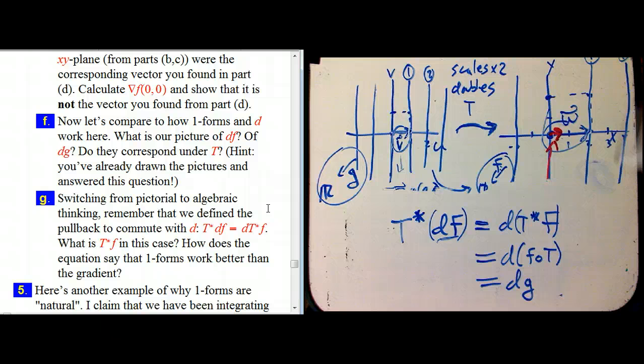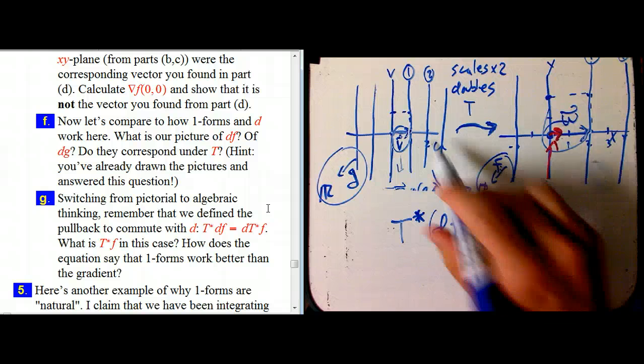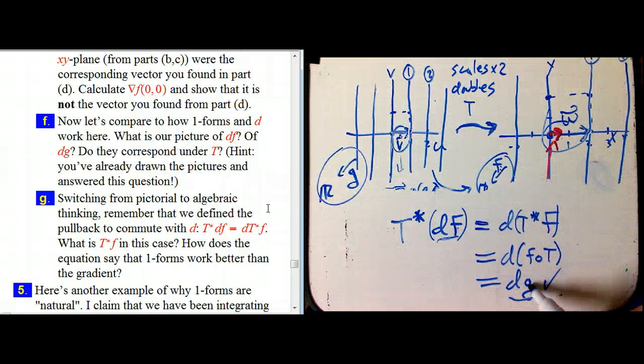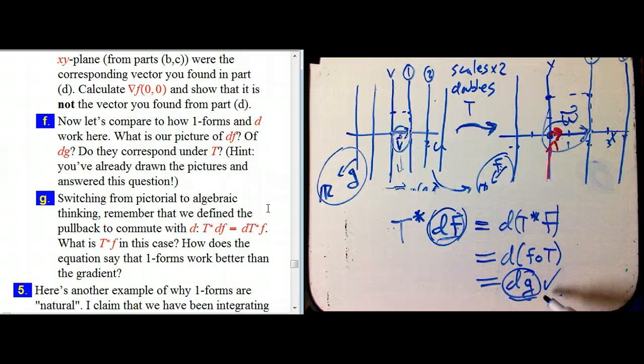And so, indeed, df are these level sets, this picture of a one form. When we drag it back and produce the corresponding thing over here, we do get the level sets of g. So f and g correspond, and their differentials correspond. The one forms correspond. And that's a precise way of saying that this is really better than the gradient.